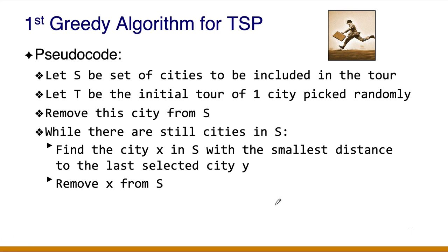Notation-wise, we use S to represent the set of cities that we can consider. T will be the tour that constitutes the current solution. The steps are simple: initially, T holds one city that you pick randomly, and you remove that city from S. This is the initialization.